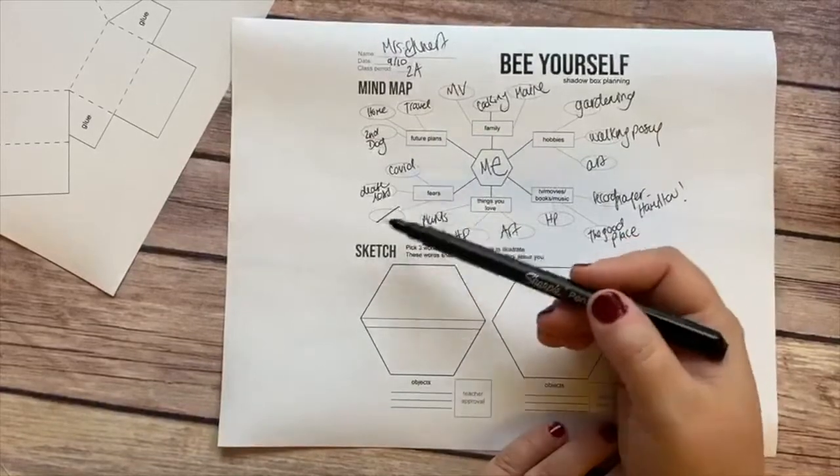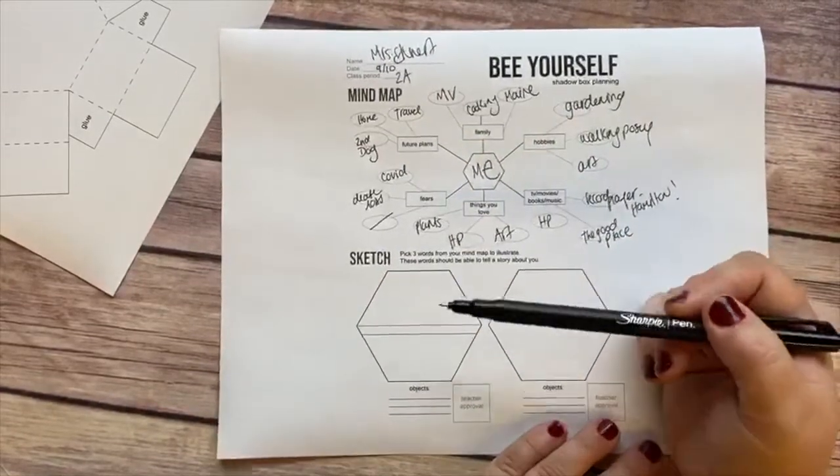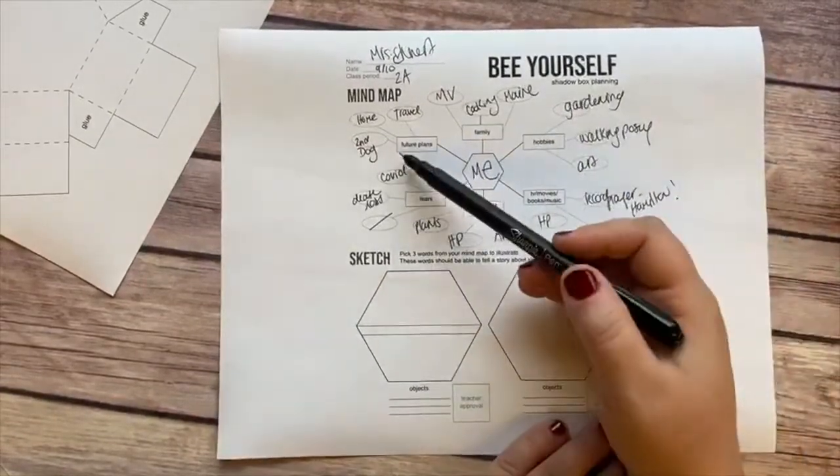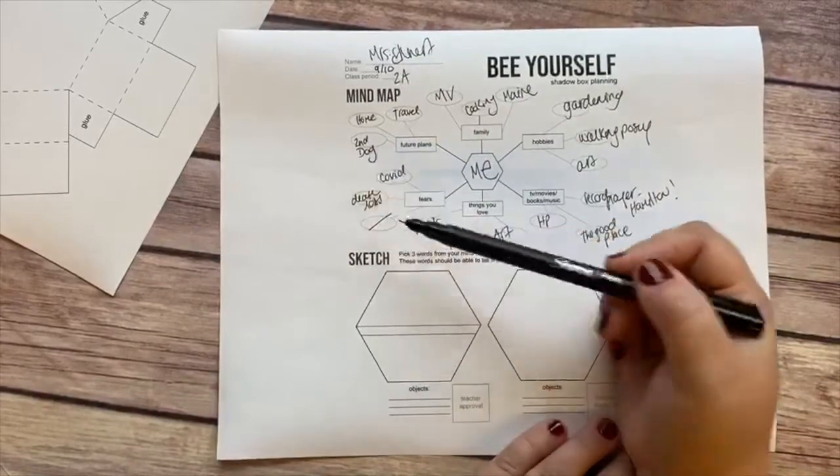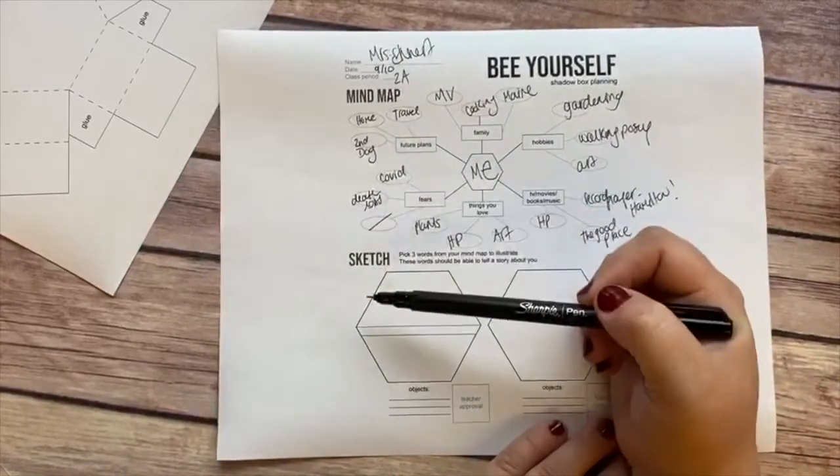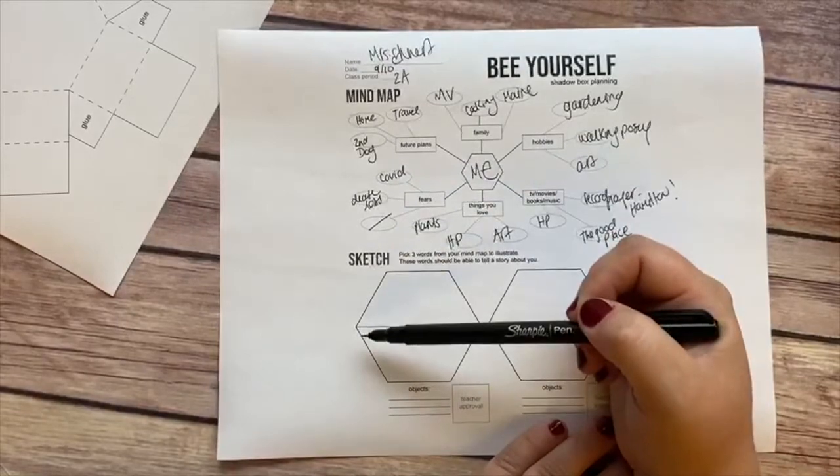Future plans: my husband and I would love to get a second dog, we want to buy a house, I would love to travel more when we're able.